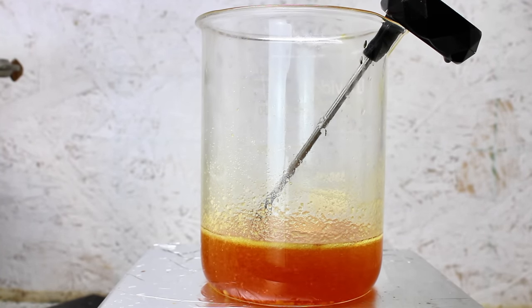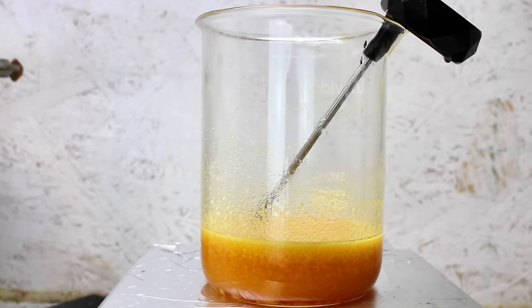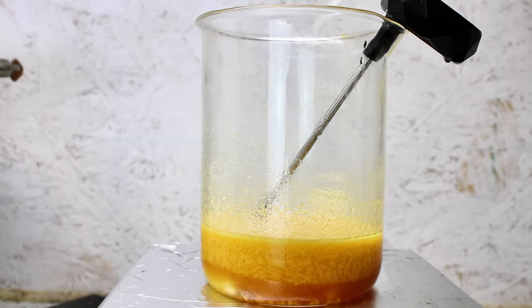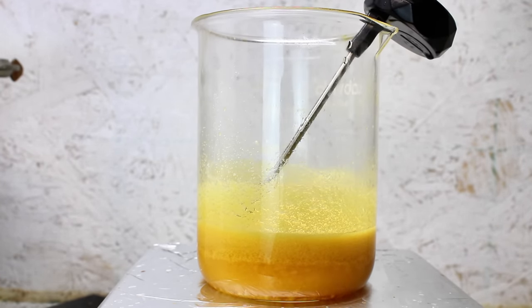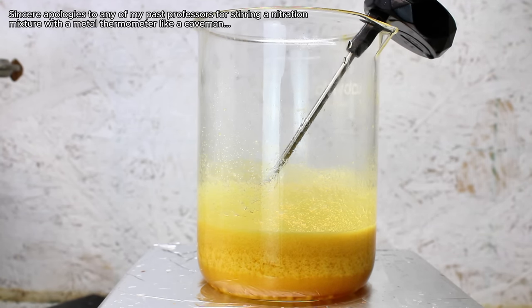Once this cooled down a bit, the solution became a deep orange and I went ahead and added another 20 grams of sodium nitrate. This time, yellow crystals immediately began to crash out and I had to slowly heat the mixture up to around 125 degrees Celsius before they melted.